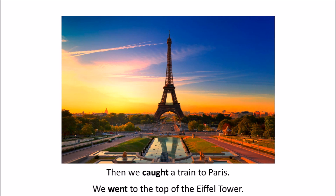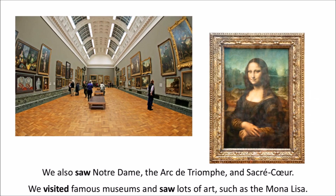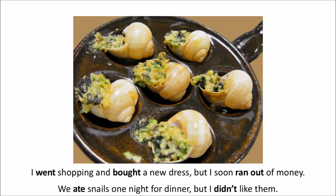Then we caught a train to Paris. We went to the top of the Eiffel Tower. We also saw Notre Dame, the Arc de Triomphe, and Sacre Coeur. We visited famous museums and saw lots of art, such as the Mona Lisa. I went shopping and bought a new dress, but I soon ran out of money. We ate snails one night for dinner, but I didn't like them.